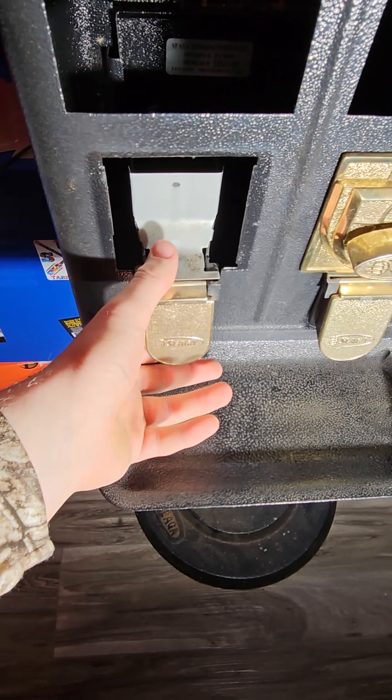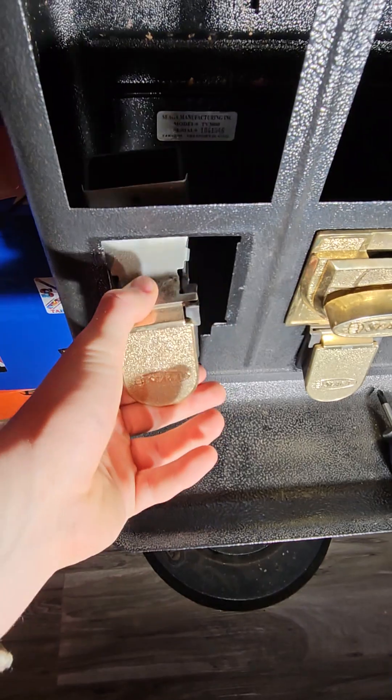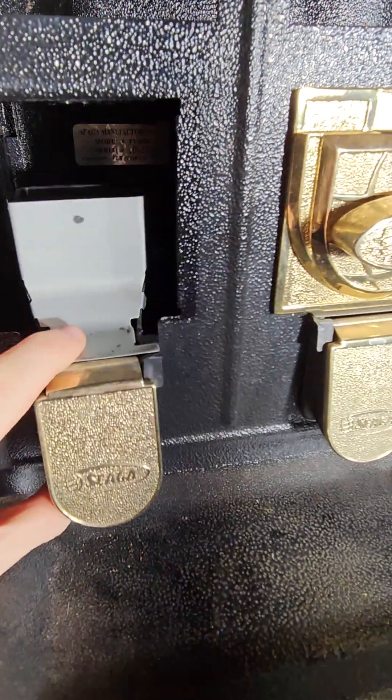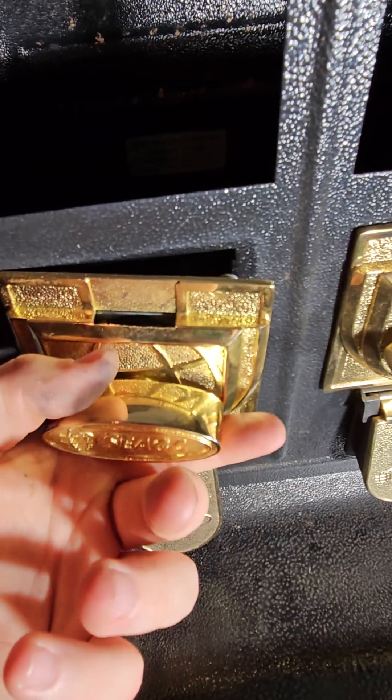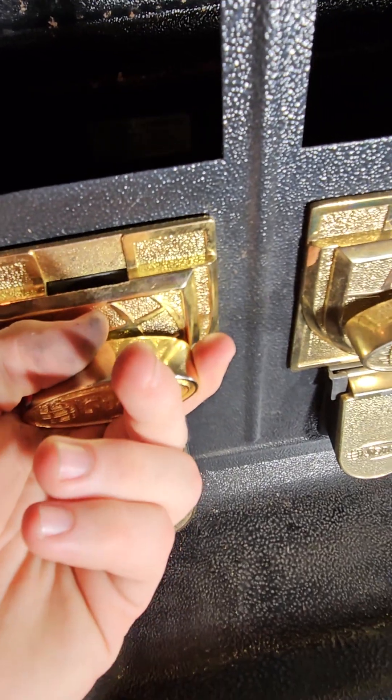From here you can go ahead and pull your candy slides out to clean them too. Go ahead and pop that back in. Now I'm going to pop the new coin mech in there. Now just tighten those two little screws back down, you should be good. All right, now I'm going to do the same thing on the other side.